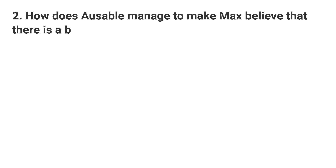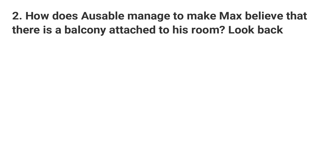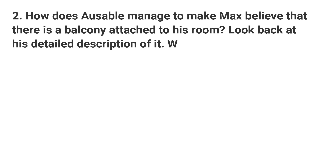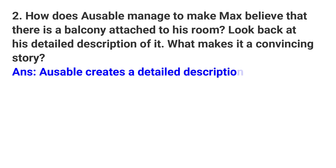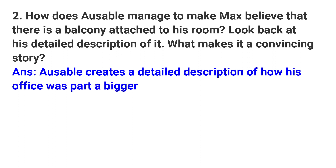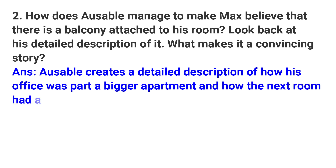Question: How does Ausable manage to make Max believe that there is a balcony attached to his room? Look back at his detailed description of it. What makes it a convincing story? Answer: Ausable creates a detailed description of how his office was part of a bigger apartment and how the next room had a direct connection with the balcony.